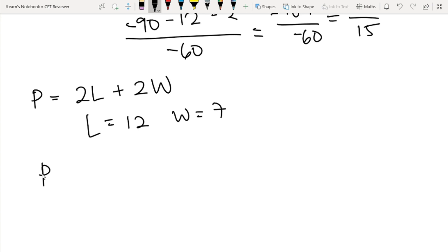To solve for the perimeter of the rectangle, you just plug in the values of L and W: 2 times 12 plus 2 times 7. So 2 times 12 is 24, 2 times 7 is 14, so P is now equal to 38.